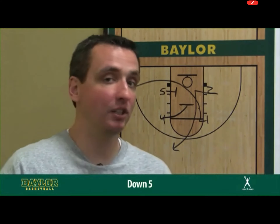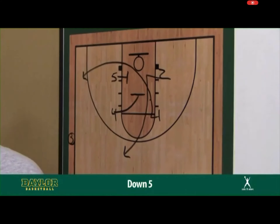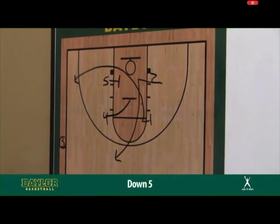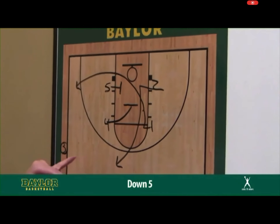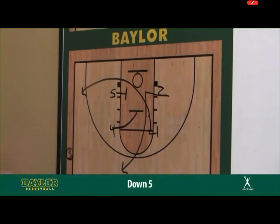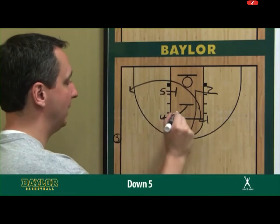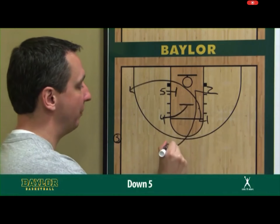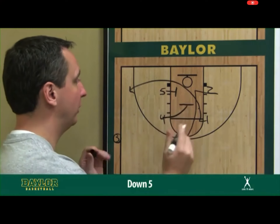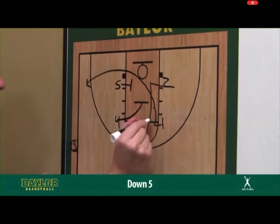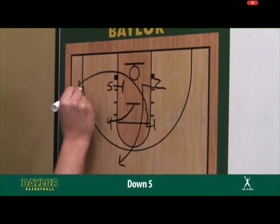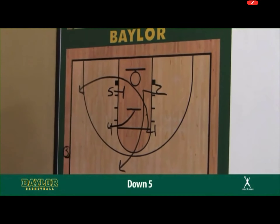It's a two-possession game. We're down five with 26 seconds. We'd like to take a three if we can or anything we can get to the rim. Again, the two coming up to the top of the key, middle tunnel area, the one coming off the five's baseline screen corner.